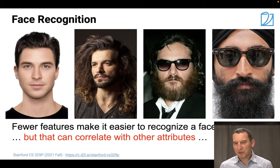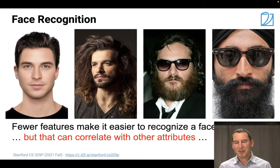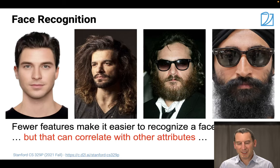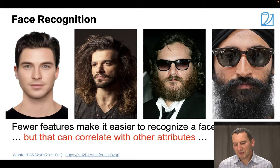As the face becomes increasingly obscured, it becomes harder to recognize people. Some attributes - like covering your head or growing a beard - tend to be correlated with cultural and demographic attributes. If I don't see a face very well, my face recognizer won't work well. But it's not a problem of the face recognizer being racist - it's an issue of protected demographics exhibiting behavior that makes certain algorithms work better or worse.